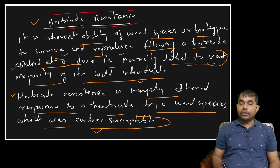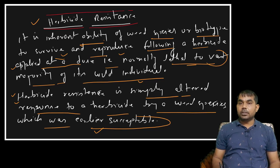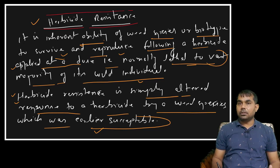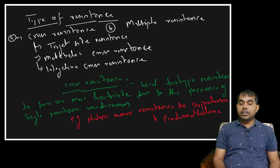Herbicide resistance is simply an altered response to the herbicide by a weed species that was earlier susceptible. The susceptible biotype becomes resistant because of an altered response due to genetic changes. For example, Phalaris minor was previously susceptible to isoproturon but is now resistant to it. There are two types of resistance: cross resistance and multiple resistance.